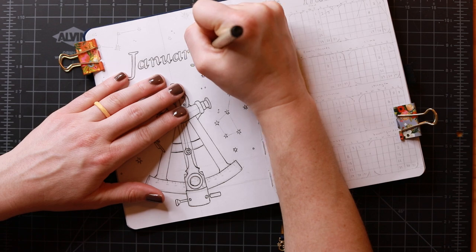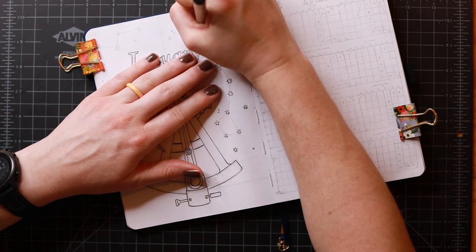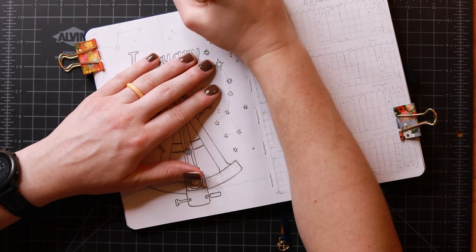In addition to the sextant, I am also drawing a few of my favorite constellations including the Big Dipper, Orion, Cassiopeia, and the Pleiades.